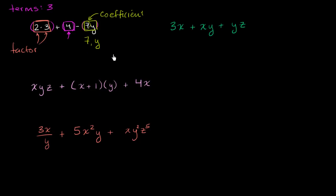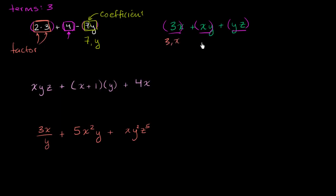Now let's do a few more examples. I encourage you to pause the video and think about what the terms are, how many terms are there in each expression, how many factors in each term, and what are the coefficients. So let's look at this first one. It's clear that we have three things being added together — a first term, a second term, and a third term. They each have two factors. The first one has factors 3 and x; the second has factors x and y; and the third has factors y and z.